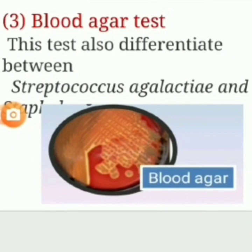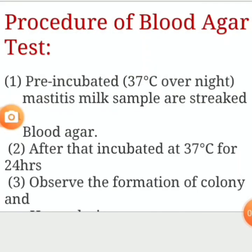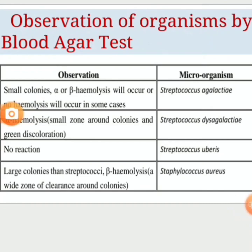The blood agar test also differentiates between Streptococcus species. Procedure: Pre-incubated mastitis milk samples are streaked on blood agar, then incubated at 37°C for 24 hours, and the formation and color of colonies are observed. Both alpha and beta hemolysis occur with Streptococcus agalactiae. Only alpha hemolysis occurs with Streptococcus dysgalactiae. No reaction occurs with Streptococcus uberis. Only beta hemolysis occurs with Streptococcus pyogenes.